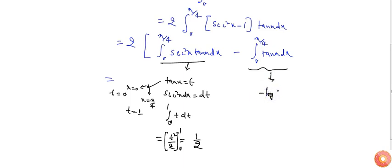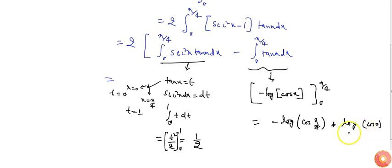Minus of log cos x. So if I put the limits I will get minus log cos π by 4 minus log, minus minus plus, so plus log cos 0. So log 1 is 0.